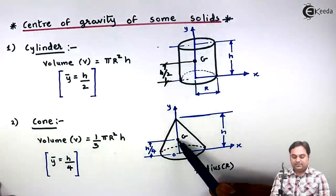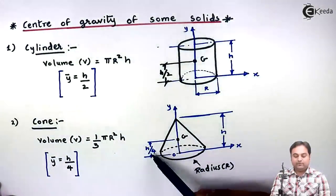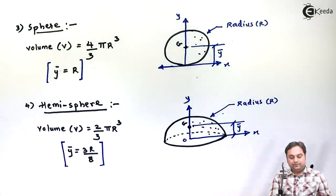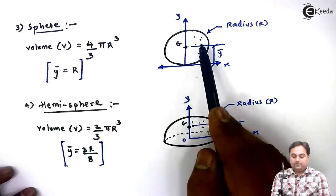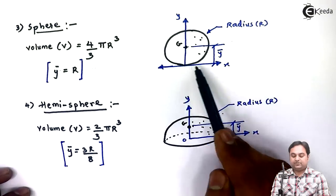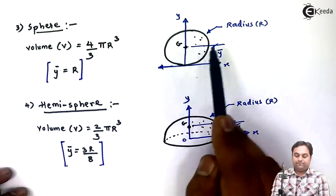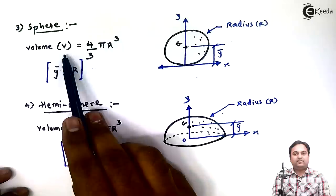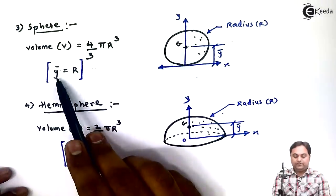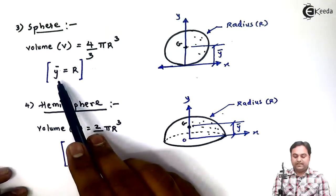Then we have sphere. The sphere is having a radius of capital R. Again it is placed on an axis system X and Y. This sphere is having a volume of 4/3 πR³.